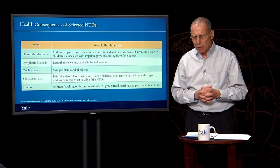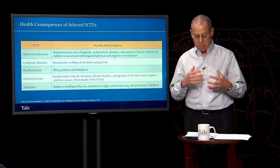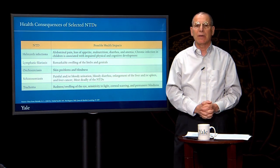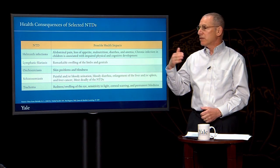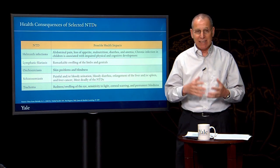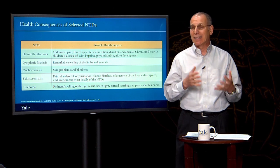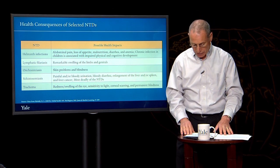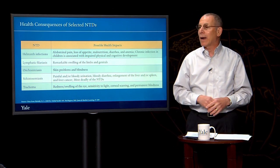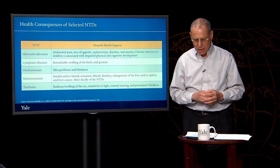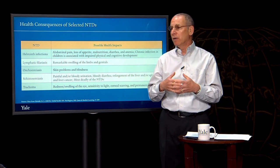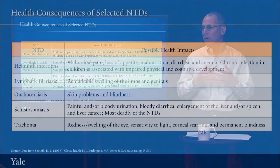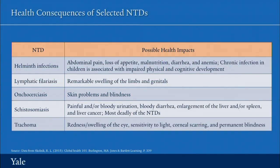Some very important progress has been made against a number of the neglected tropical diseases, including the seven we've been discussing. In addition, guinea worm is on the verge of being eradicated and would be — if it gets there before polio — only the second disease found in humans to ever be eradicated.